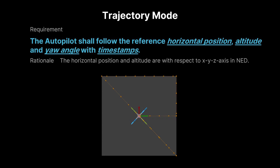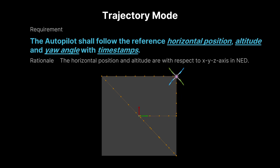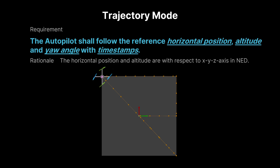In trajectory mode, the autopilot is responsible for precisely following the reference trajectory, which includes the horizontal position, altitude, and yaw angle, all defined with corresponding timestamps. This allows the drone to move along a predetermined path, making real-time adjustments to its speed, orientation, and altitude in sync with the specified timeline. By continuously tracking the reference points and timestamps, the autopilot ensures accurate navigation and smooth transitions between spatial points, maintaining the drone's position and orientation with high precision throughout the entire flight.